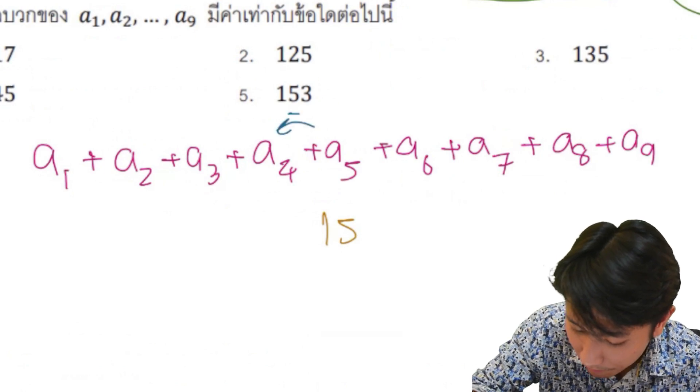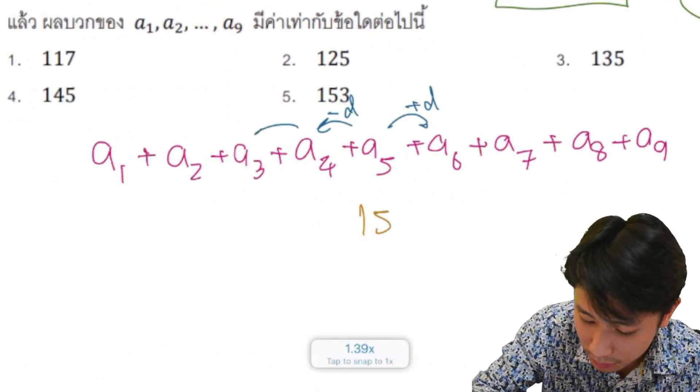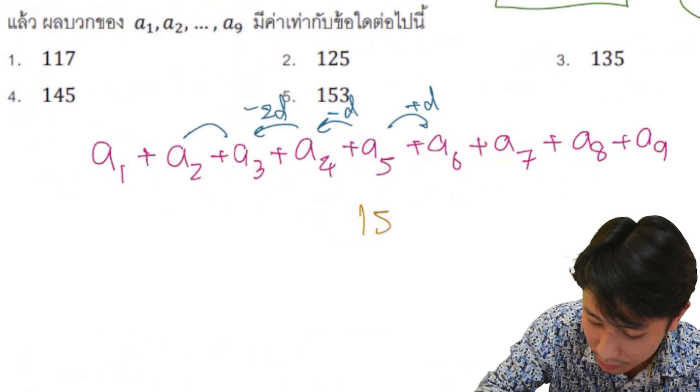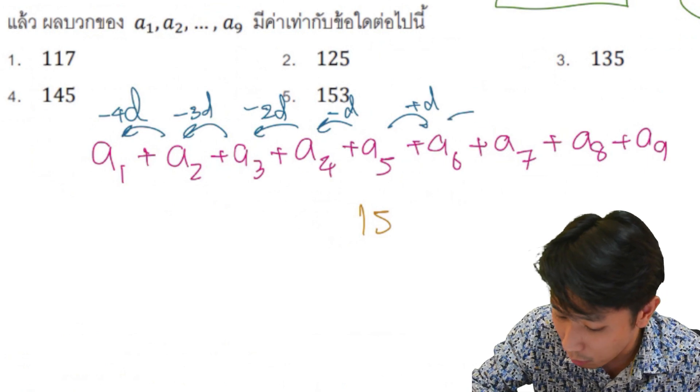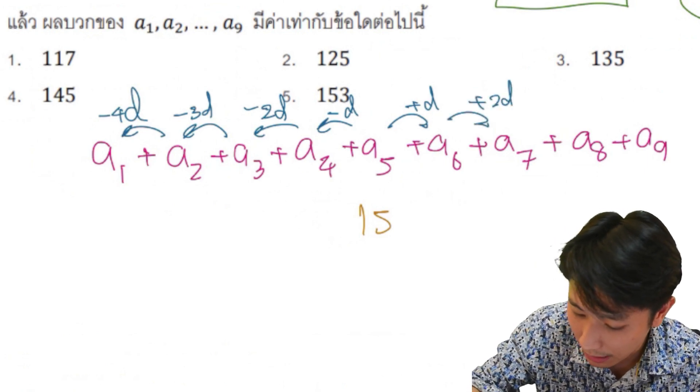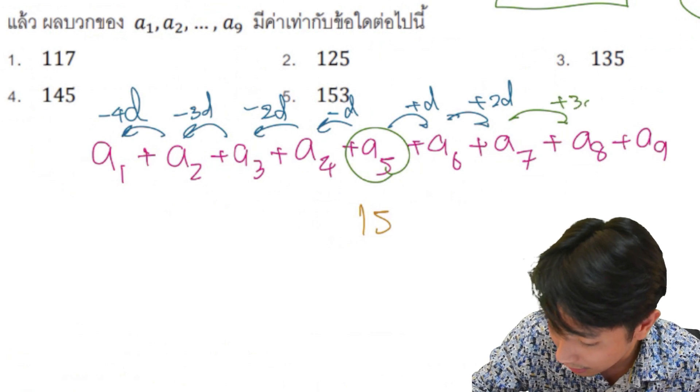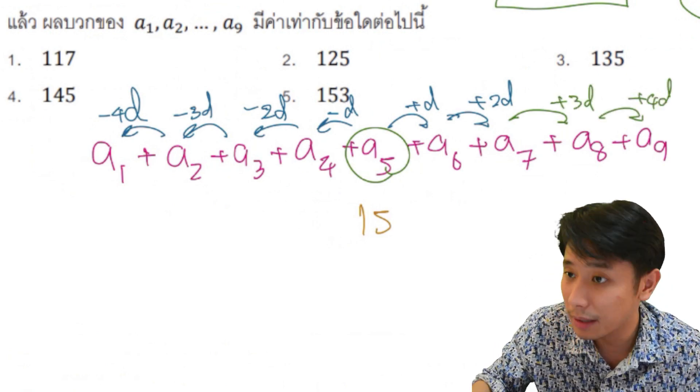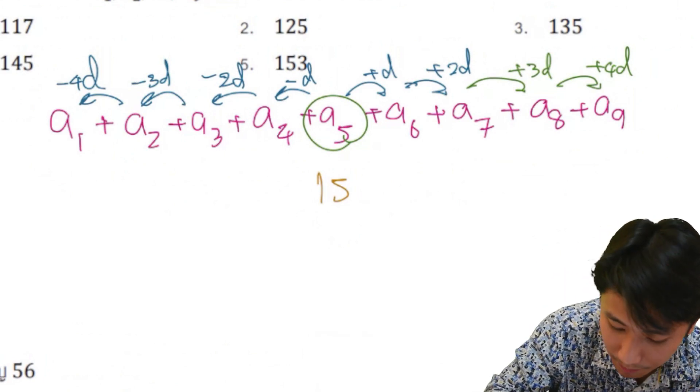It will come out that it is minus D. This is minus D. The answer is like this. Then you will minus 2D. Yes, minus 4D. Then you will minus 2D. It means that it is minus 2D. Okay. 3D and 4D. 4D. The answer is like this.